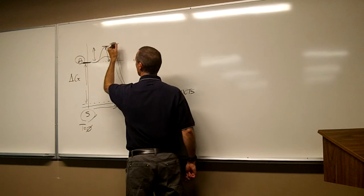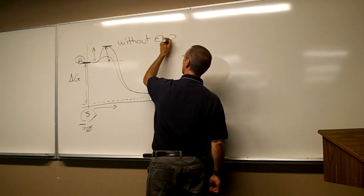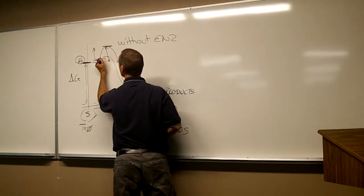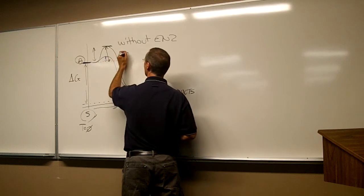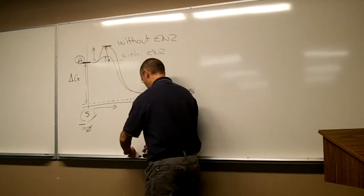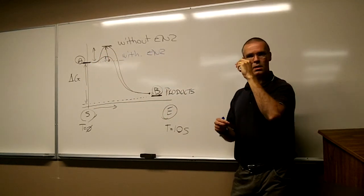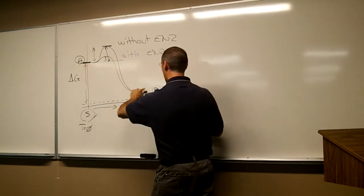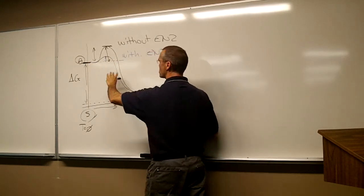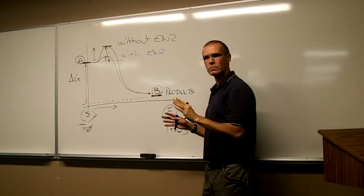Here, in black, we have without enzyme, and here in blue we have with enzyme. Without and with — the enzyme does this: it decreases the activation energy, but the energy levels of both A and B are unchanged. The delta G of the whole reaction is unchanged. The only thing that is changed is the activation energy. That's all that is changed — it's the only thing. So it takes less energy.